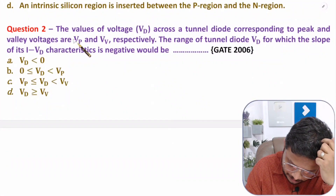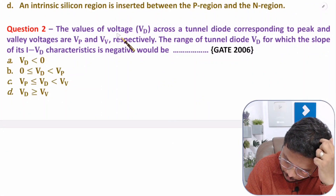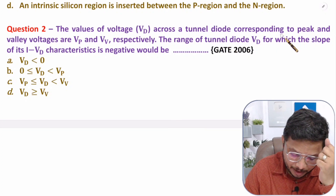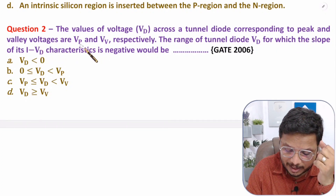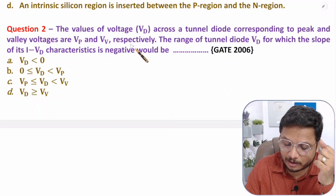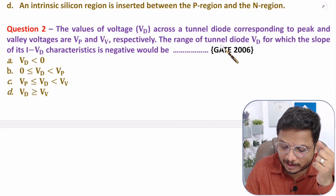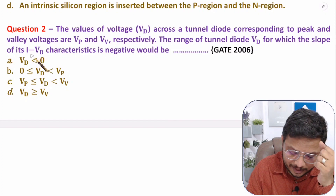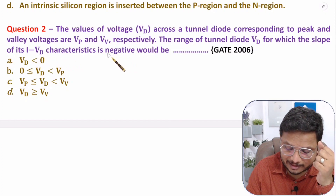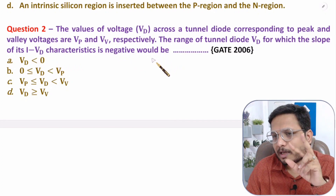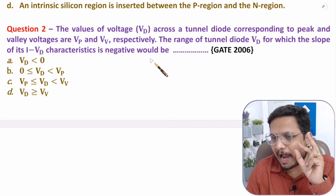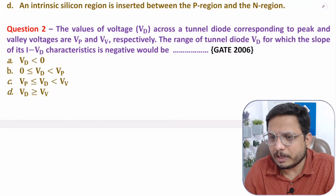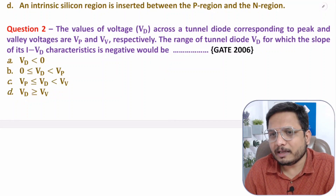Now let us look at the second question. The values of Vd across a tunnel diode corresponding to peak and valley voltage are Vp and Vv respectively. The range of tunnel diode Vd for which the slope of its I-Vd characteristic is negative — that is the range of voltage at which negative resistance characteristics exist — we need to find.